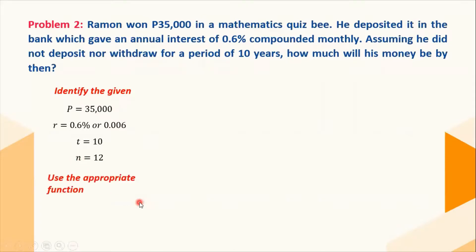Let's use the appropriate function. Since the problem involves compound interest, we can use the formula to solve the given problem. We have a equals p times the quantity 1 plus r over n raised to the power of nt. Substitute the given to the identified function. We have here a equals 35,000 times 1 plus 0.006 over 12 raised to the power of 12 times 10.